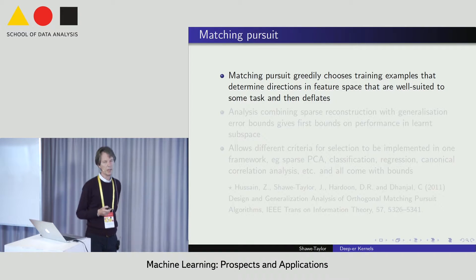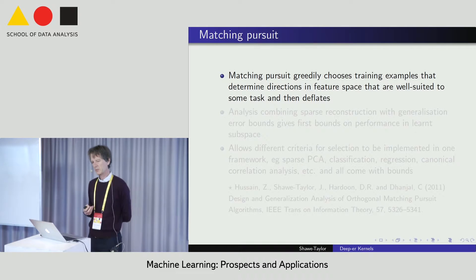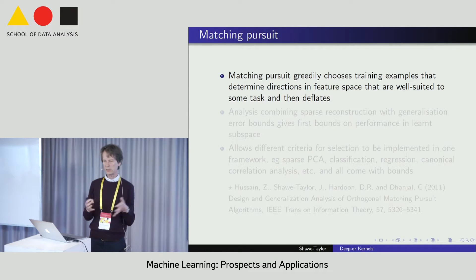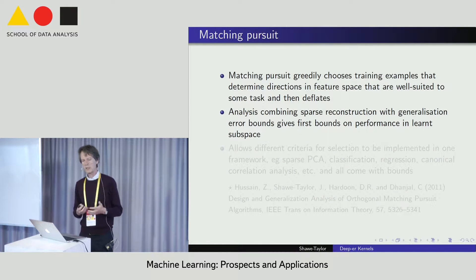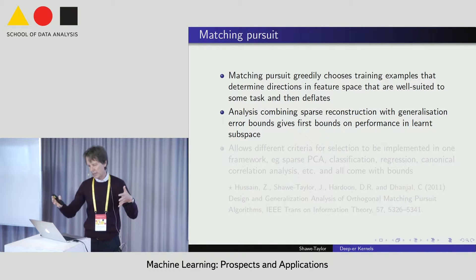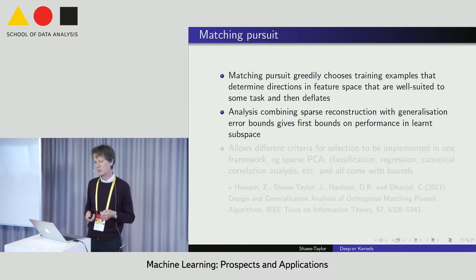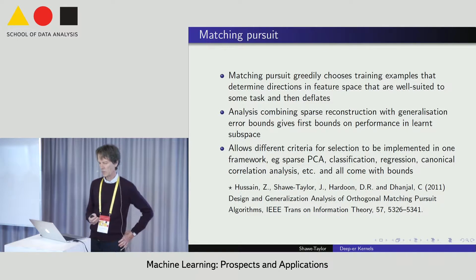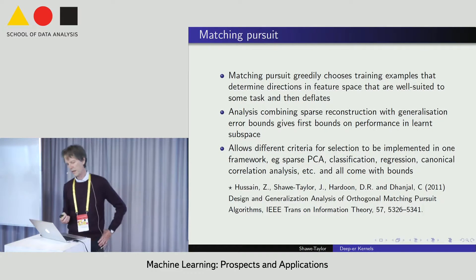The first thing I'll discuss is matching pursuit — a way of developing a representation through a greedy choice of training examples that determine the directions of the feature space well suited to the particular task, then deflate. It's like growing a representation in a greedy fashion. Combining the sparse reconstruction idea with generalization bounds, this is the first bounds that apply to the complete pipeline of learning a representation and the performance of the corresponding classifier or regressor.